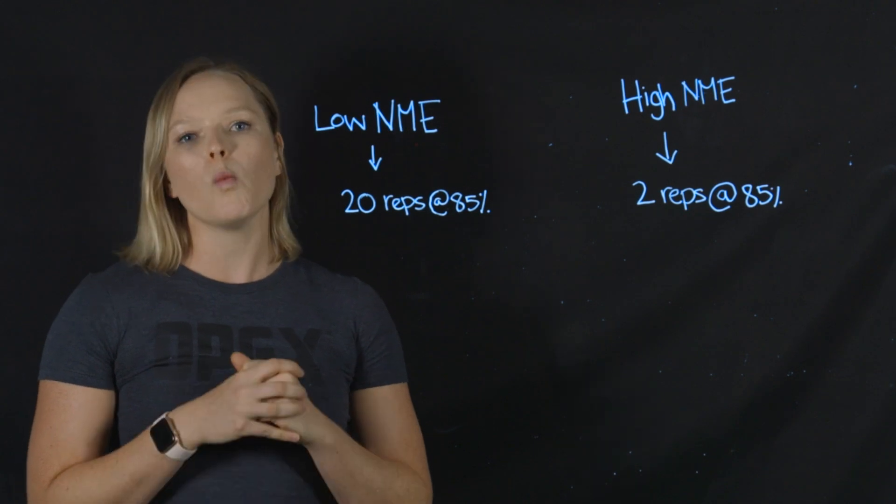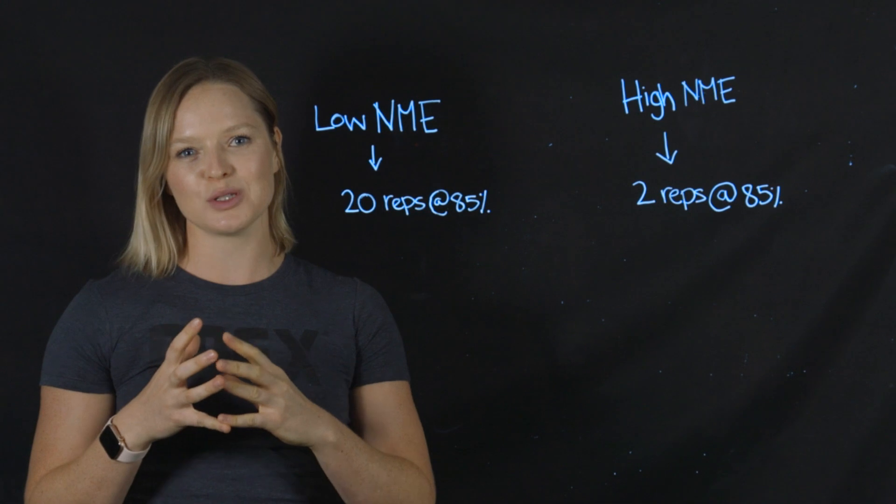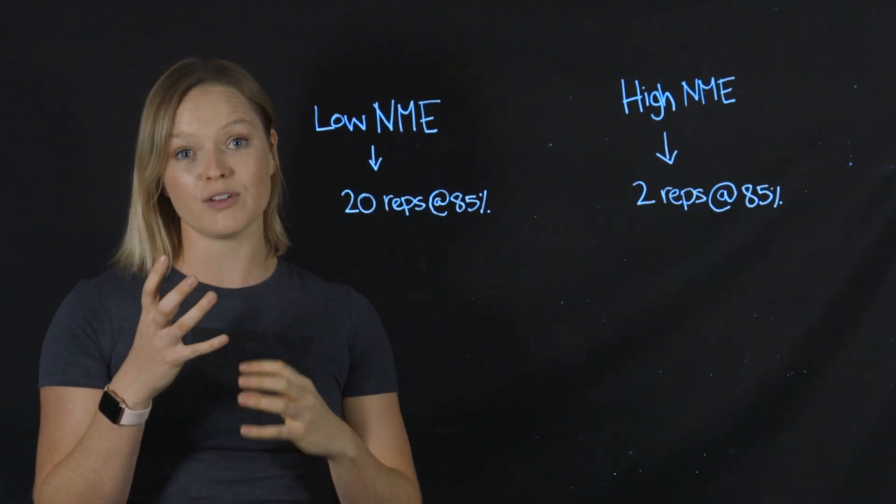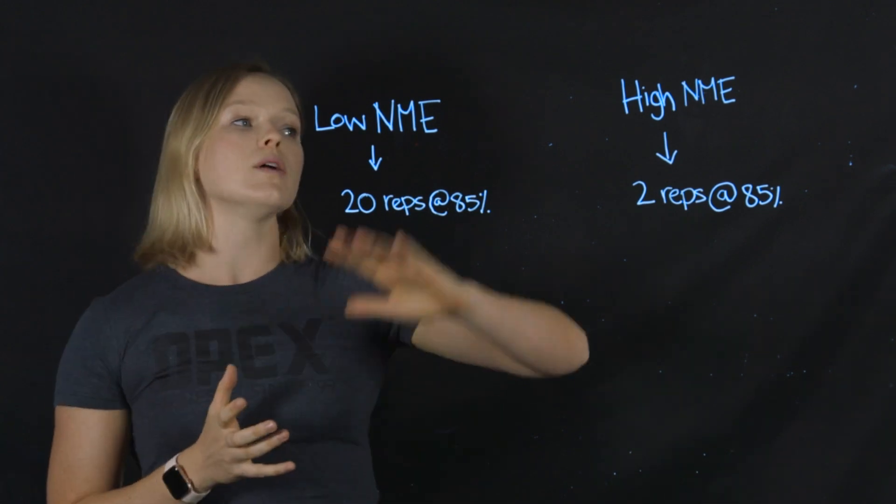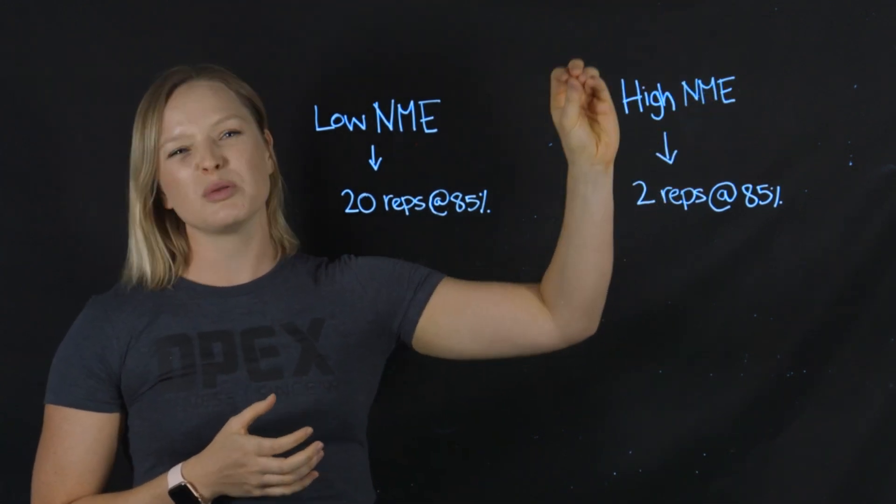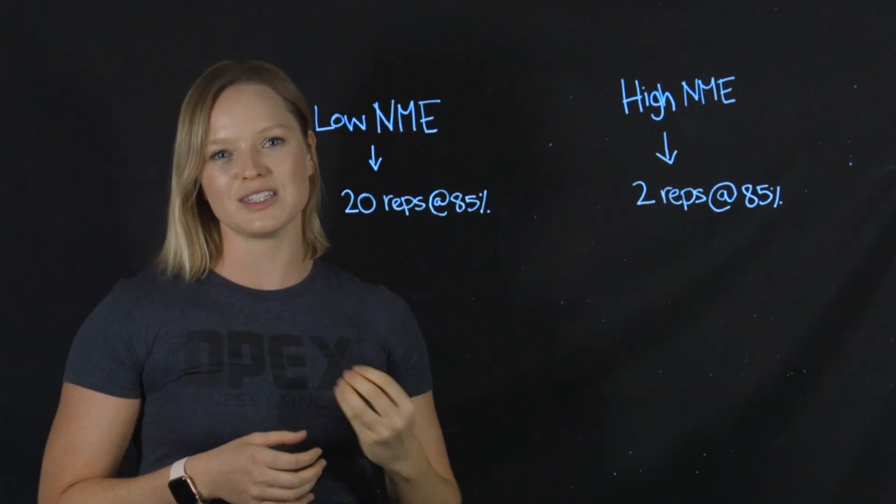What we look at is whether someone is low NME, which actually means they're able to do a very high number of repetitions and their neuromuscular efficiency is very low, or they have high NME. They're able to do a very low number of repetitions, but they are really able to dig deep and they have very high neuromuscular efficiency.